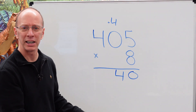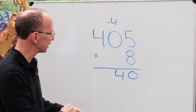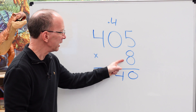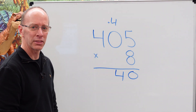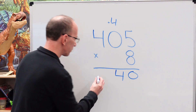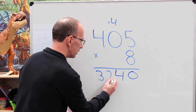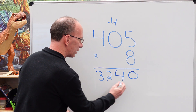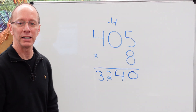I like throwing some challenging problems at you — I know you can handle it. 8 times 4, what is it? 32. Put 32 right here. If you want to put a little comma there, you can. There's our answer.